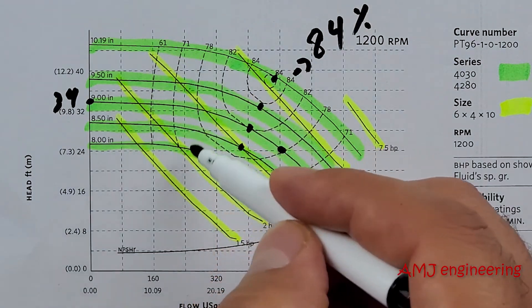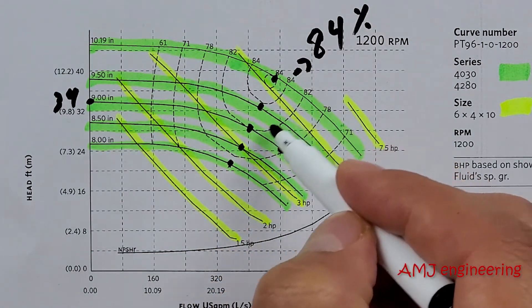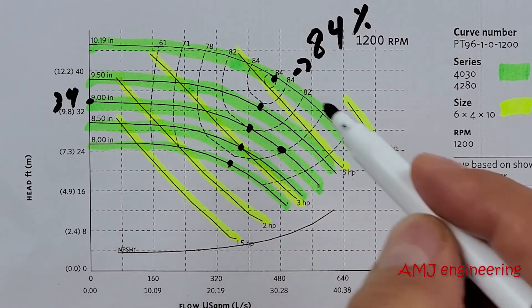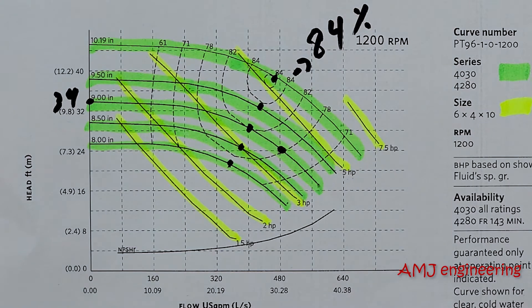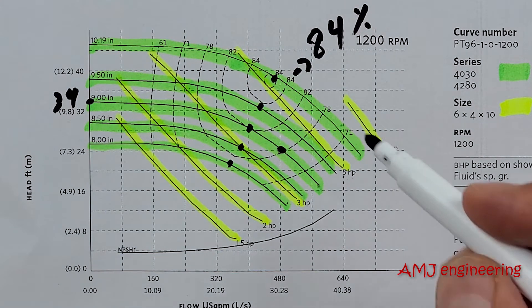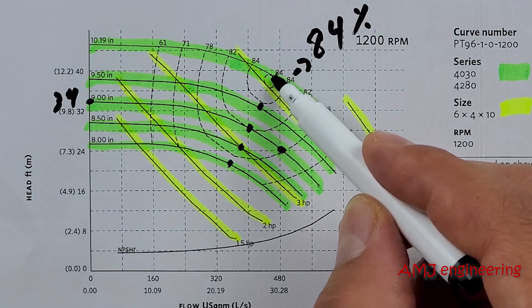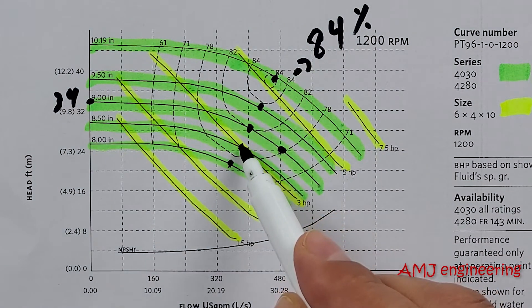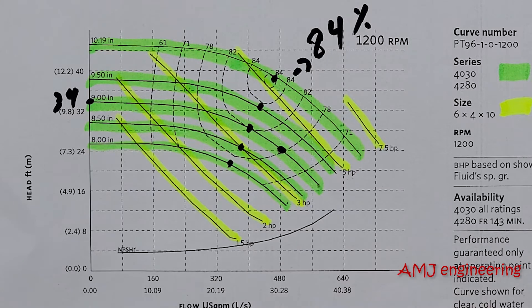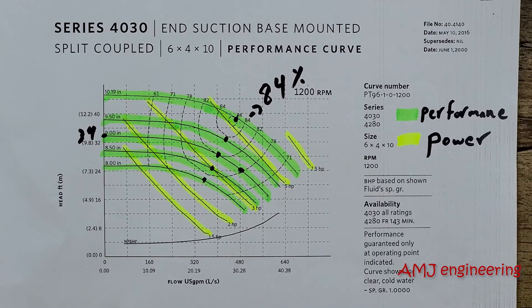Also, these efficiency curves are provided on the pump performance curve. These efficiency curves are labeled in percentages. Now, some curves will also mark the best efficiency point. This is the point on the pump's performance curves that corresponds to the highest efficiency and is usually between 80 to 85 percent of the shutoff head.